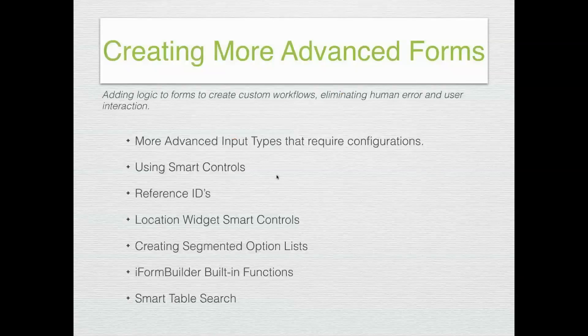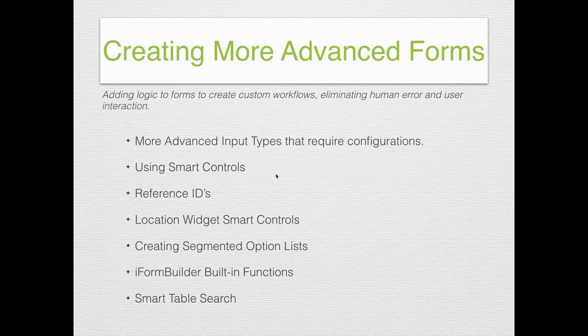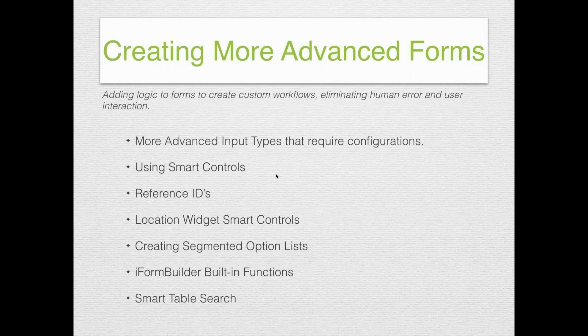Now let's go into an overview of smart controls and how to create more advanced forms. You can add more advanced input types that usually require some configuration — like option lists, the Manity Works barcode scanning, or third-party URL scheme integrations that connect to other apps on your device. These input types result in better data and a better user experience.